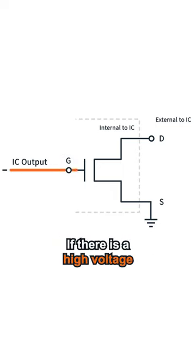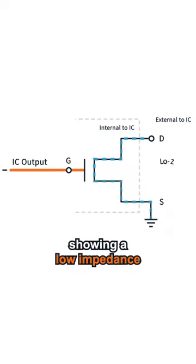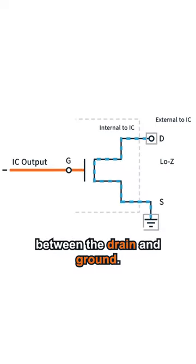If there is a high voltage applied to the gate, then the switch closes, showing a low impedance between the drain and ground.